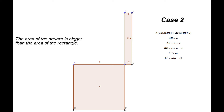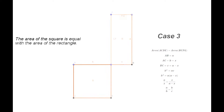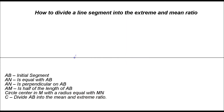The division of a line segment into the extreme and mean ratio is such that the whole segment A-B is to the greater segment A-C as the greater segment A-C is to the smaller segment B-C. Let's look next into a method of dividing a segment A-B into the extreme and mean ratio.